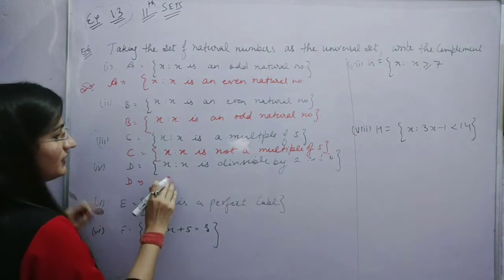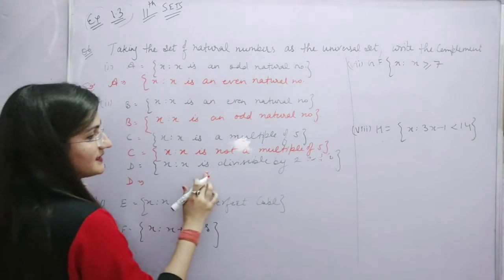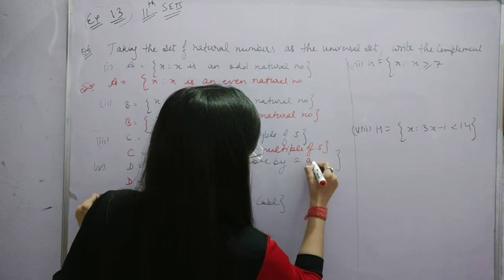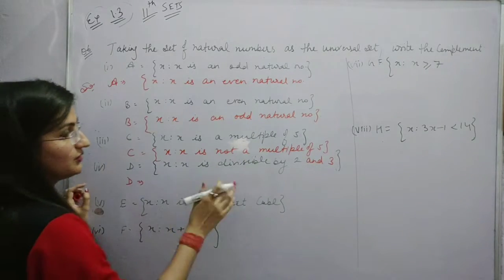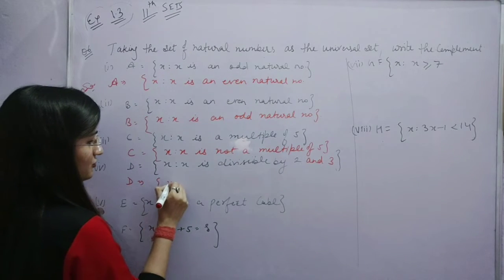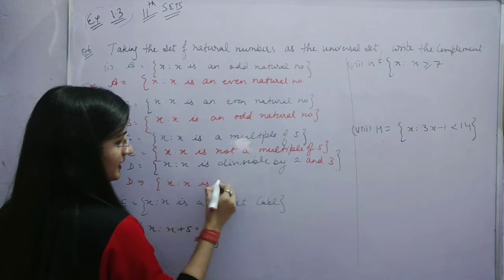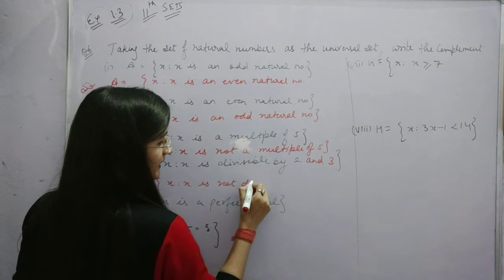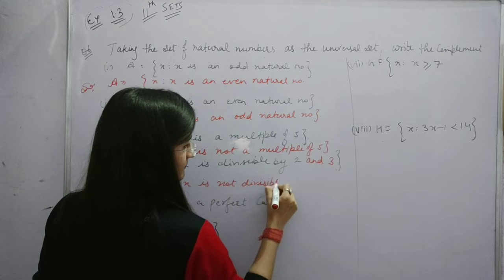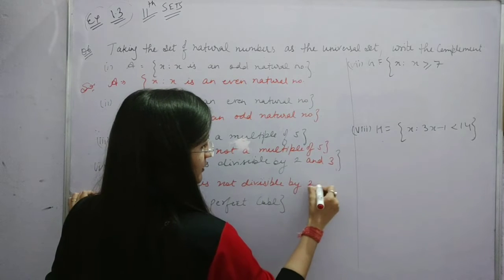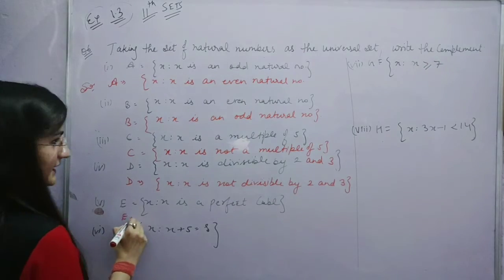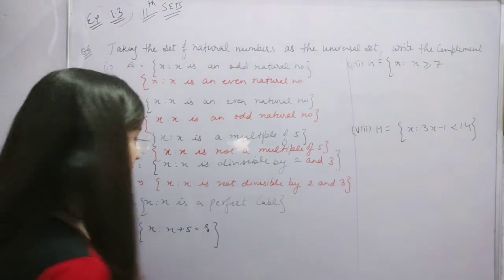Not a multiple of 5. Then, for the set such that x is divisible by 2 and 3 — the element is divisible by 2 and 3. So the complement is the set of elements that are not divisible by 2 and 3.